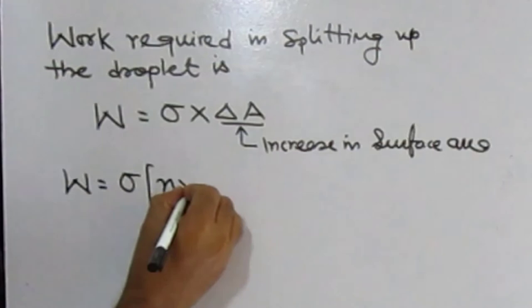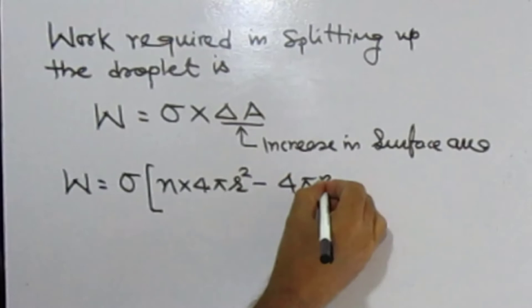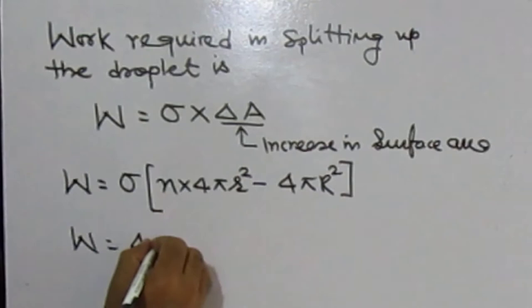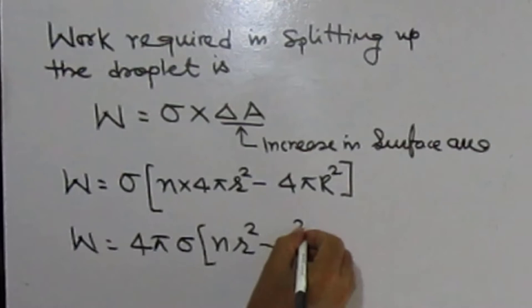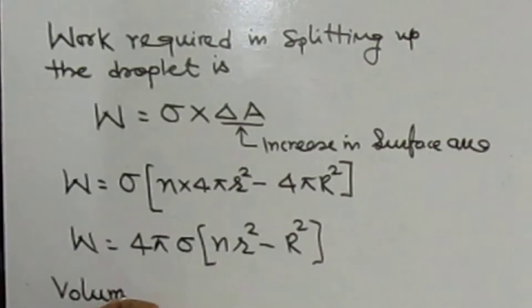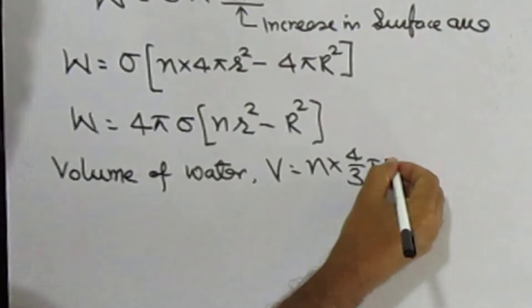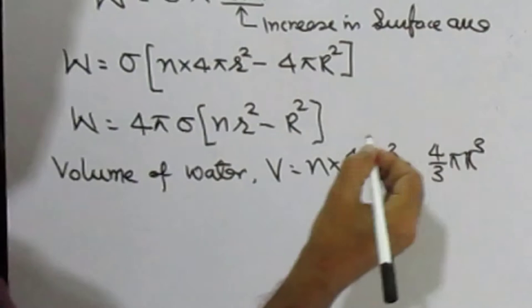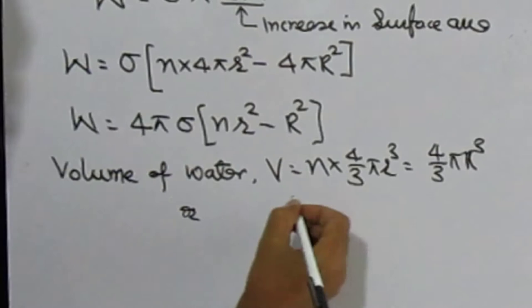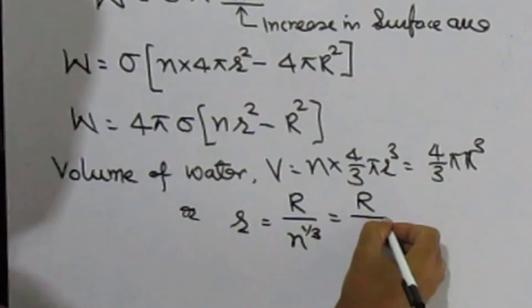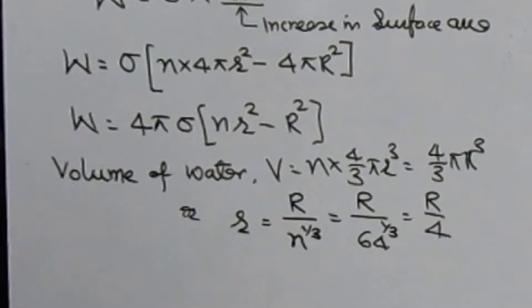Work W equals sigma times delta A (increase in surface area). Final area is N droplets times 4πr² minus 4πR². Volume of water remains the same, so N × (4/3)πr³ equals (4/3)πR³, giving r equals R divided by N^(1/3), which equals R divided by 64^(1/3), which equals R/4.